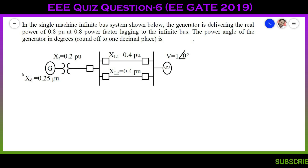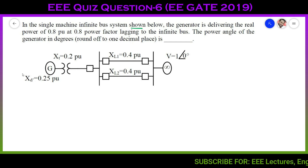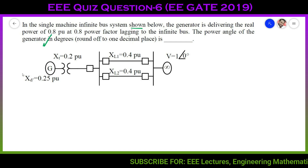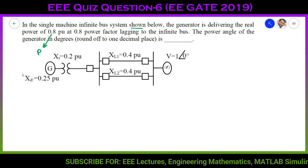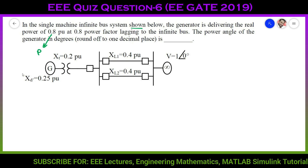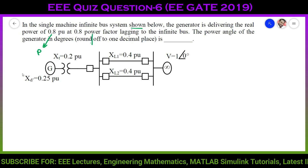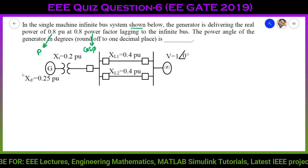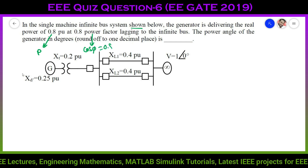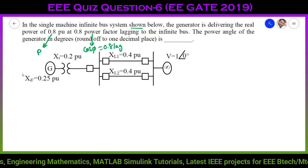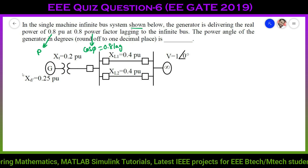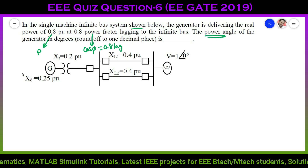The question is: in the single machine infinite bus system shown, the generator is delivering real power P = 0.8 per unit at a power factor of 0.8 lagging to the infinite bus. We need to find the power angle of the generator in degrees.